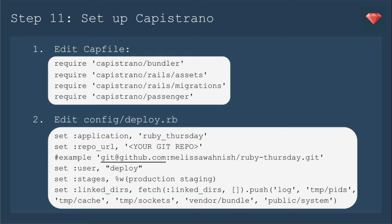We'll edit the Capfile to require these different pieces of the gems so that these processes run during deployment. The Bundler bundles your gems, Rails Assets precompiles your assets, Rails Migrations runs any migrations that need to happen, and then Passenger restarts the app. Next we'll edit the config deploy.rb, which was added by our cap install command. We're going to set the application name — it should match what you've named your application — and you need to set the repo URL. For example, I have Ruby Thursday on GitHub, so I'll put that URL right in there.